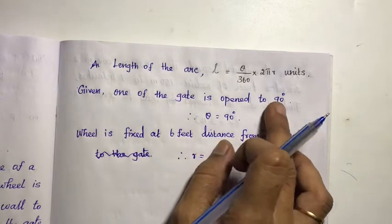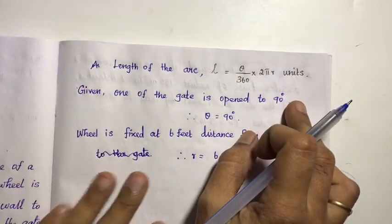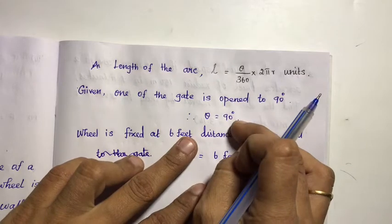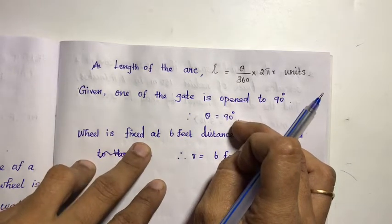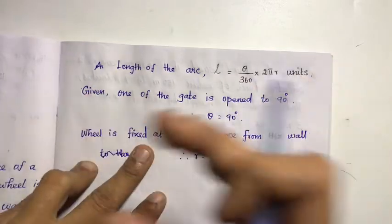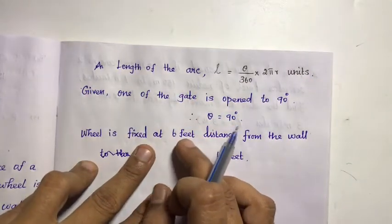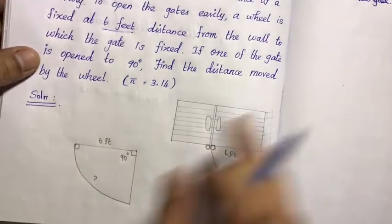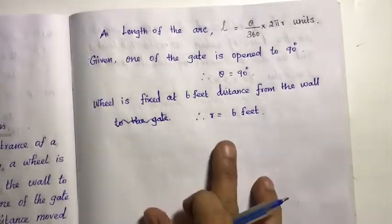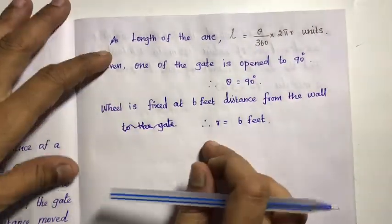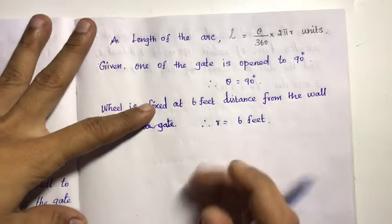One of the gates is open to 90 degrees. So theta equals 90 degrees. Next, the wheel is fixed at 6 feet distance from the wall, so the radius equals 6 feet. Now substitute the values into the formula, using pi equal to 3.14.